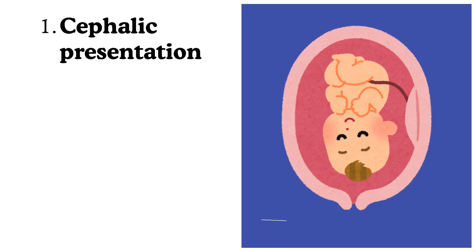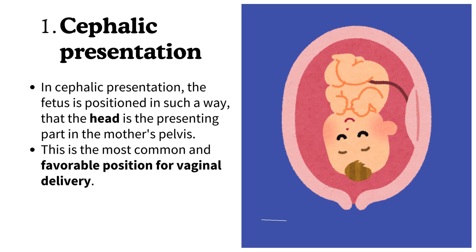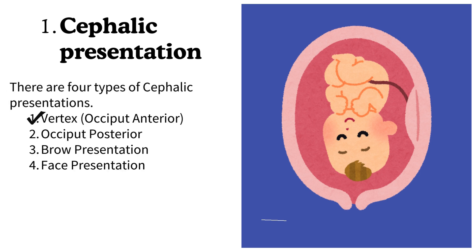Number 1: Cephalic presentation. In cephalic presentation, the fetus is positioned in such a way that the head is the presenting part in the mother's pelvis. This is the most common and favorable position for vaginal delivery. There are four types of cephalic presentations: vertex, occiput anterior, occiput posterior, brow presentation, and face presentation.